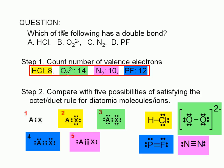Since the question is asking for the molecule with a double bond, the correct answer is phosphorus fluoride.